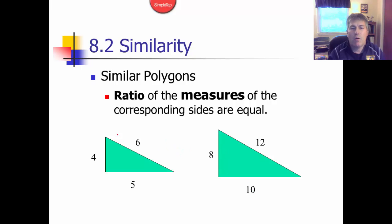If I label my triangle ABC and A prime, B prime, C prime, as you can see, the ratio of the corresponding sides are the same. 4 is to 8, as 5 is to 10, as 6 is to 12. The ratio of all the sides are equal. The ratio is 1 to 2.